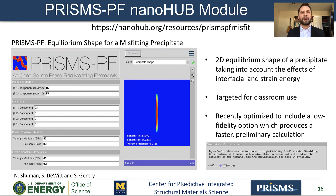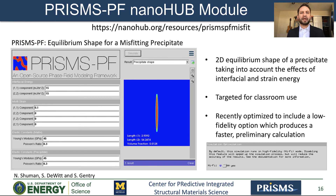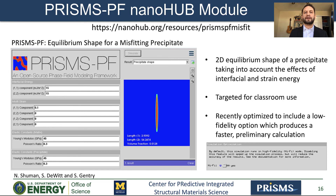I would like to briefly talk about a NanoHub application based on PRISMS-PF, accessible via the link shown on the slide. This application calculates the 2D equilibrium shape of a precipitate, taking into account the effects of anisotropy in interfacial and strain energies. It is targeted for classroom use — the idea is that students can understand the effect of each parameter by setting different combinations of values. It was recently optimized to include a low fidelity option, which produces a faster preliminary calculation.